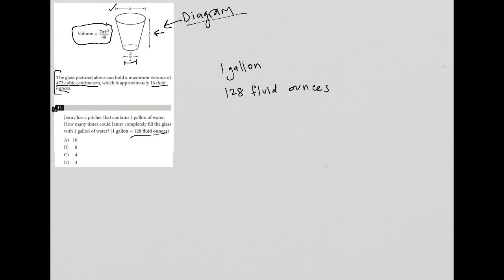We know that the glass in terms of fluid ounces is 16 fluid ounces. So if this glass is empty and we have water here and we're pouring water into here, how many times could we do that? Well, this seems to be a very simple question in which we're just going to divide.